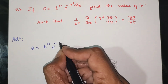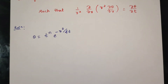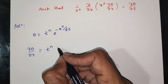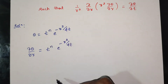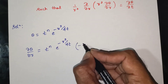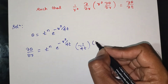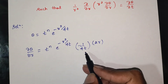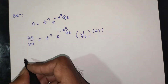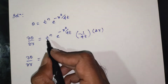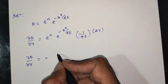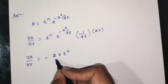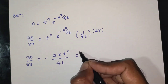θ is equal to t^n · e^(-r²/4t). First, ∂θ/∂r is equal to t^n (constant) times the derivative of e^(-r²/4t). Here, the derivative of -r²/4t with respect to r is -2r/4t, so ∂θ/∂r equals t^n · e^(-r²/4t) · (-2r/4t).